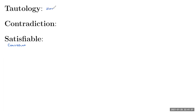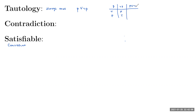A tautology is a compound proposition that is always true. A commonly seen example is p or not p. We can examine this using a truth table: p takes on the values true and false, so not p would be false and true. Then p or not p gives us true or false, which is true, and false or true, which is also true. So for any assignment of p, this compound proposition is always true.